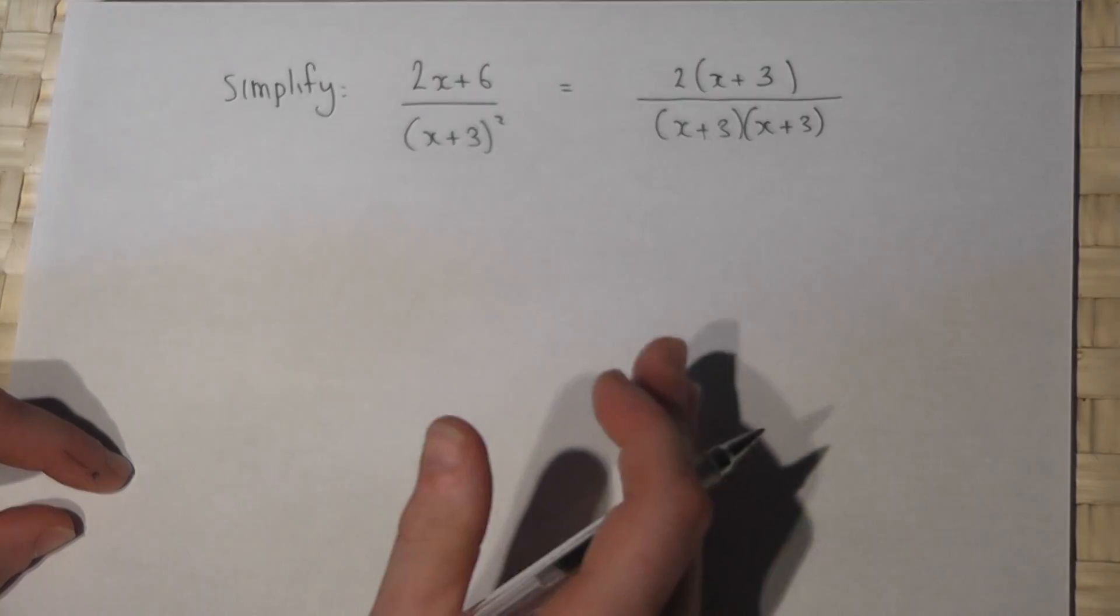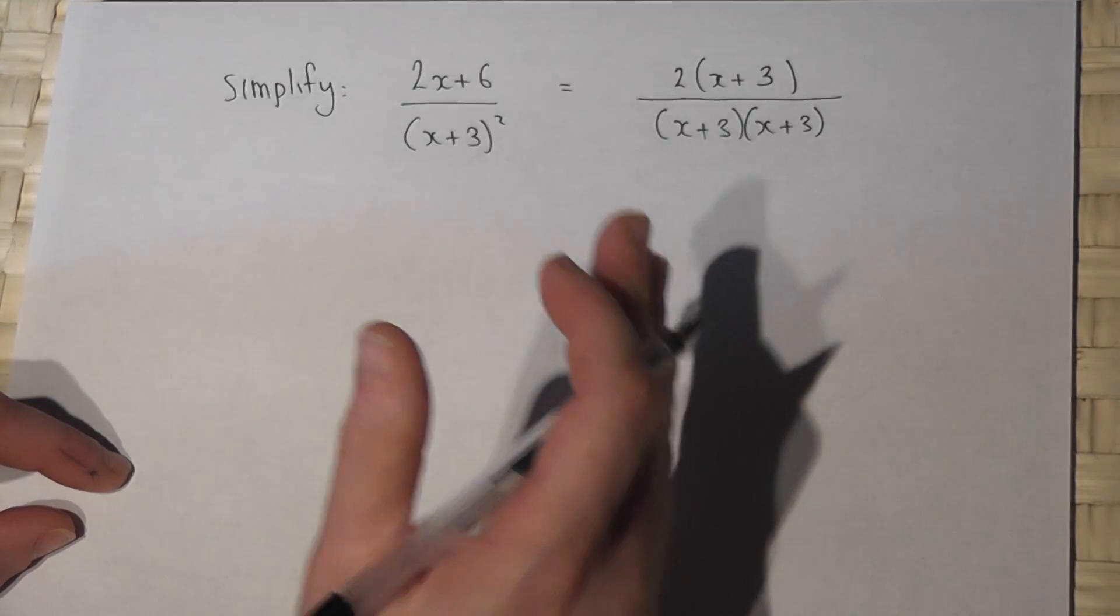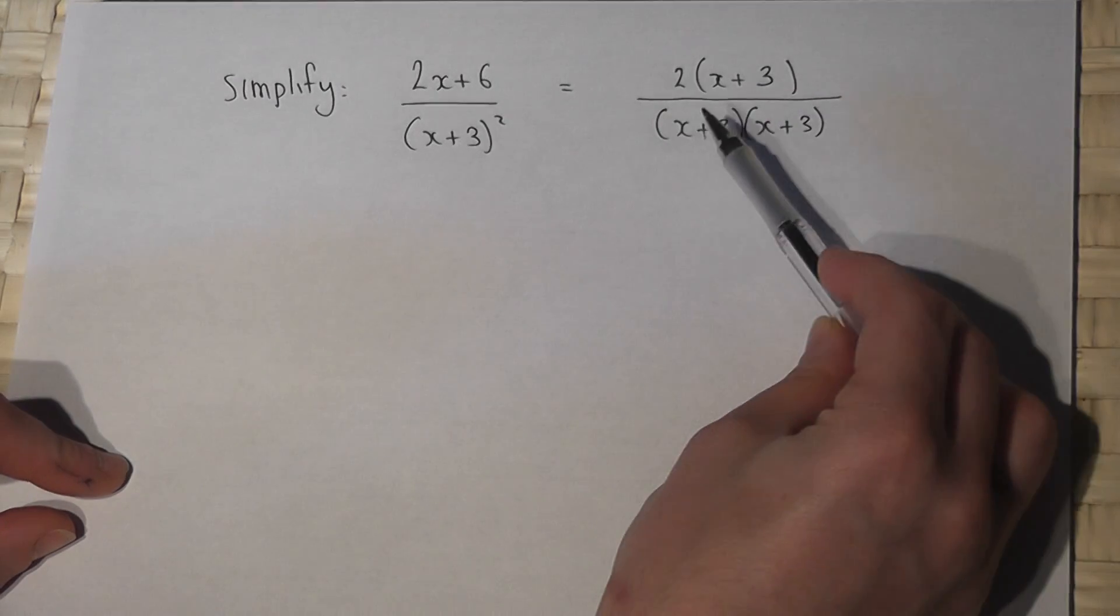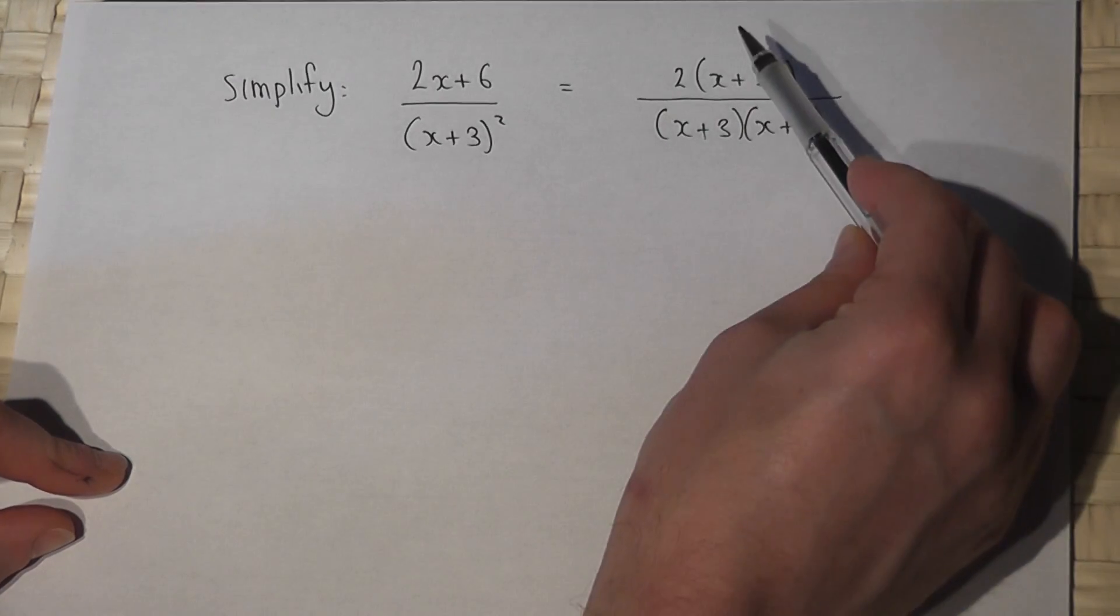This is the key fact to be aware of. Having factorized, I look for anything which is the same on the top and bottom.